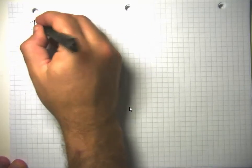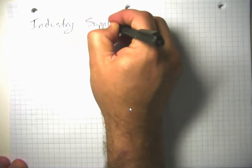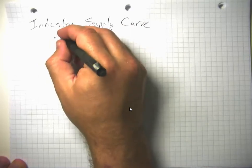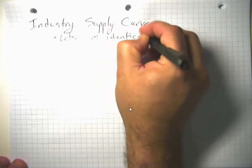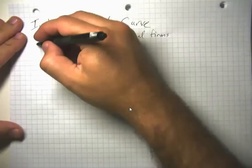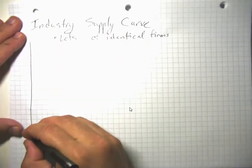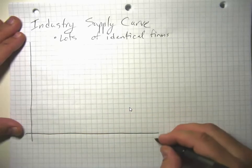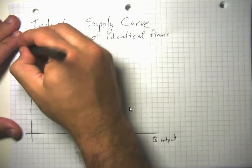Now I'm going to talk about the industry supply curve, specifically the case where we have lots of firms with identical cost structures. Notice that in perfect competition, basically everything comes down to price and cost because there isn't much else that firms can compete on. All of their products are the same, so they're only able to compete on price.